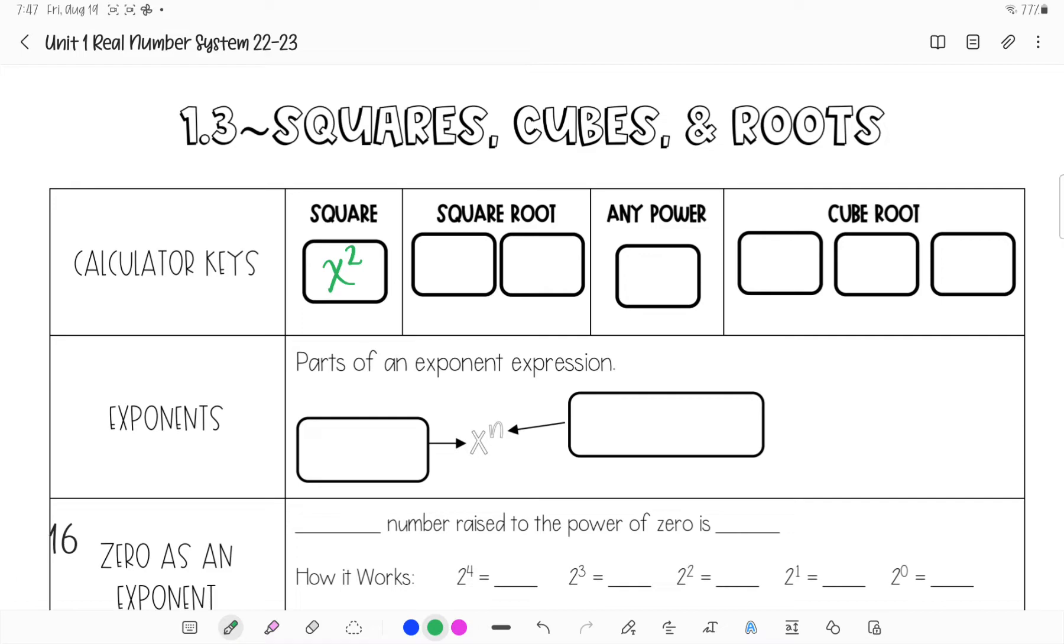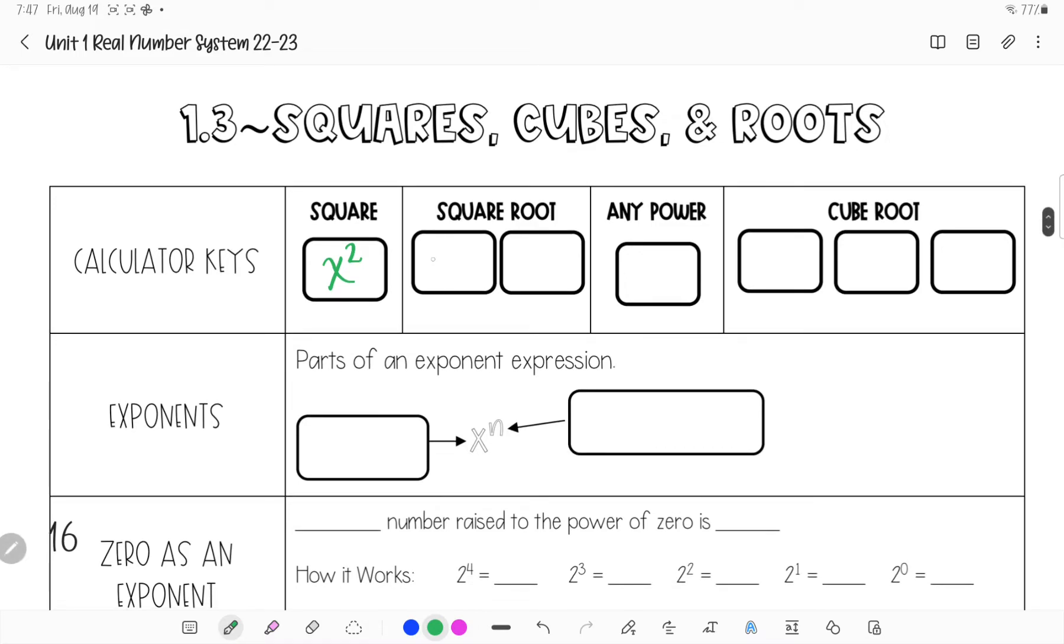If you are going to square root something, you first have to hit the second key, which is in the very top left. And then you're going to hit the x-square key. If you look above the x-square key, if you look above most any key on your calculator, they have all of these. Let me make sure I have the right color for yours.